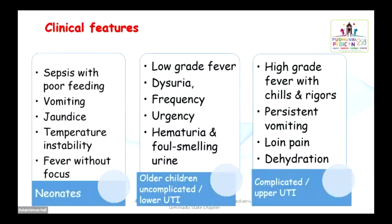UTI has varied clinical presentations in various age groups. Neonates can present with sepsis, poor feeding, vomiting, jaundice, temperature instability, or fever without any focus. Older children with uncomplicated lower UTI present with low-grade fever, dysuria, frequency, urgency, hematuria, and foul-smelling urine. Complicated UTI or acute pyelonephritis is characterized by high-grade fever with chills and rigors, persistent vomiting, loin pain, and dehydration.